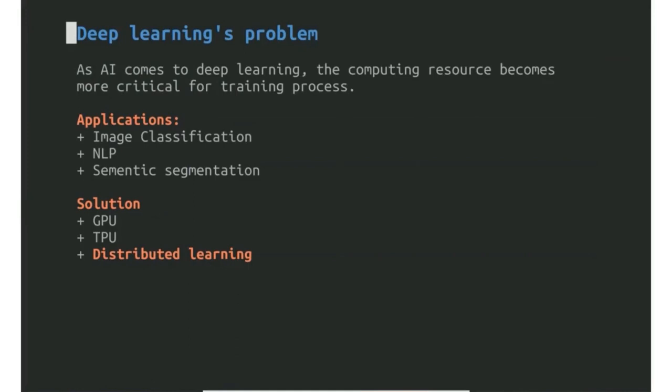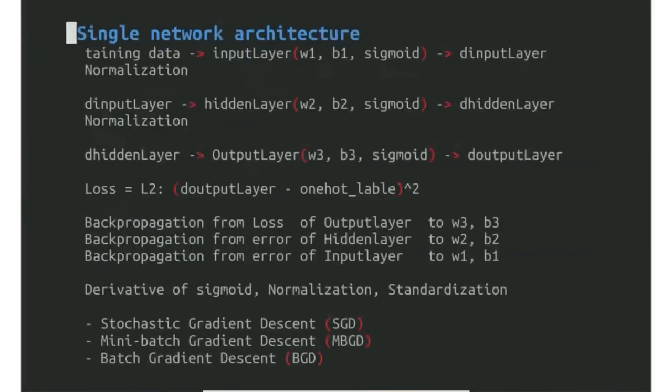Now it comes to the deep learning model. AI and deep learning mean the computing resources really become very crucial for the training process. There are many applications, but the demand is huge. We can use GPU, but distributed learning is one topic that's very hot now.